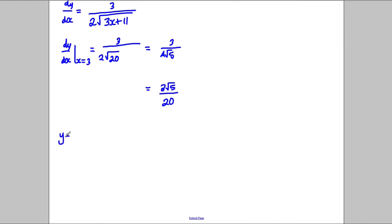So now we need to put it in the correct form. So y subtract, our y value was 2 root 5, so we have 2√5, equals m, which is this, 3√5 over 20, times x subtract 3. Multiply everything through by 20, so we have 20y subtract 40√5 equals 3√5 x subtract 9√5.